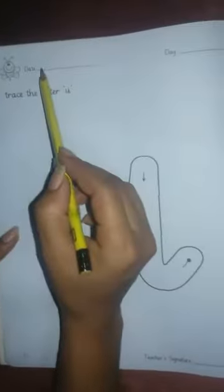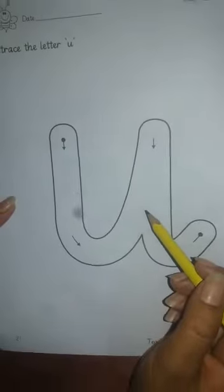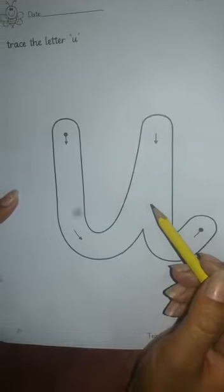So dear students, before we start, write the date over here. And over here, trace the letter U. So students, today here we learn about the letter U. So this is a letter U, okay? U, say U. U, U, very good.